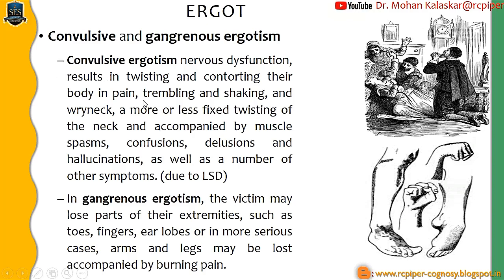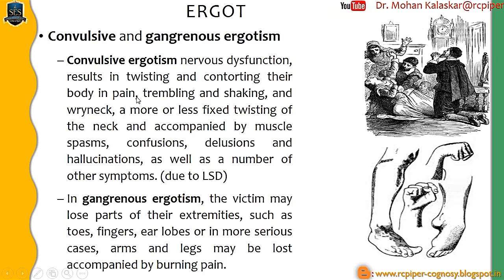Those effects are known as Convulsive Ergotism and Gangrenic Ergotism. Ergot particularly contains a substance having a psychotic effect, that is nothing but Lysergic Acid Derivatives. This Lysergic Acid Derivative is responsible for Convulsive Ergotism. In Convulsive Ergotism, the person who is accidentally exposed to Ergot develops symptoms like body pain, trembling, shaking, wrecking of the neck, twisting of the neck, confusion, deterioration, and delusion. Lysergic acid causes abnormal body posture as well as twisting of the hands and legs.